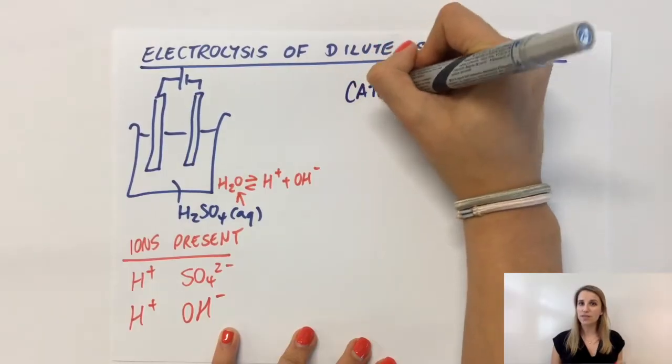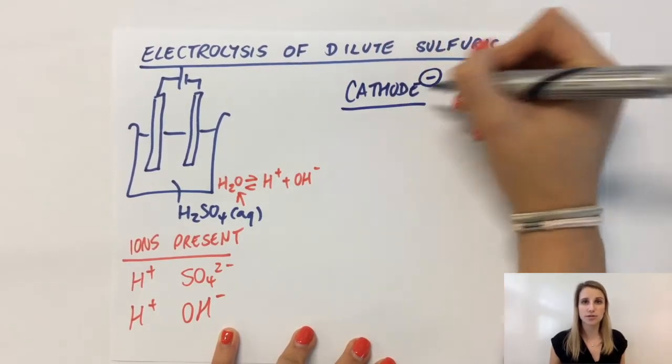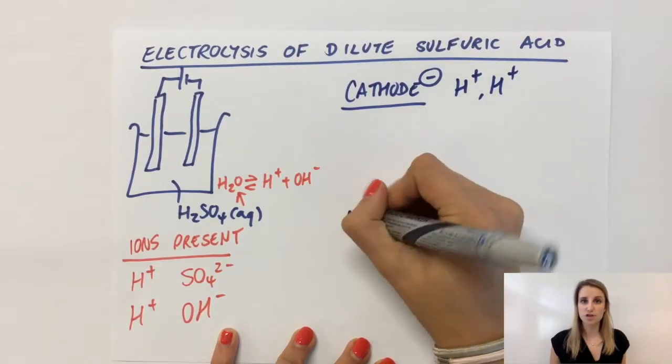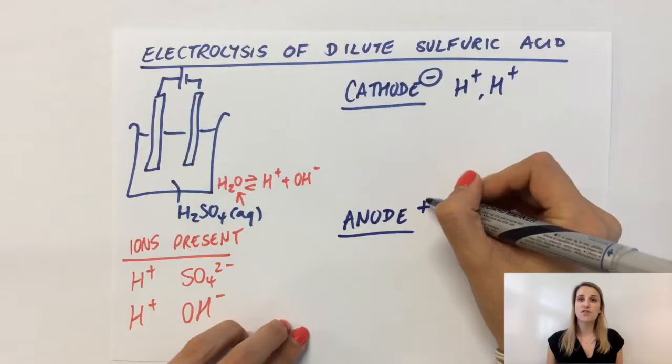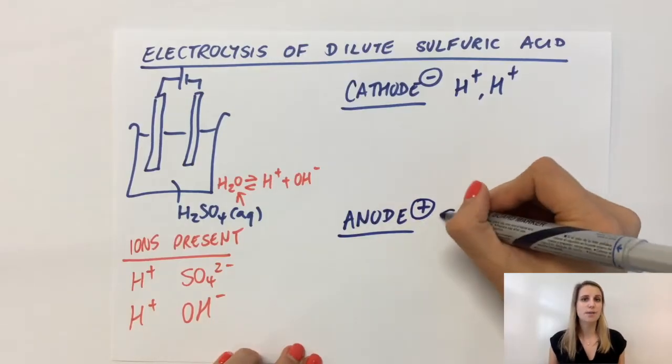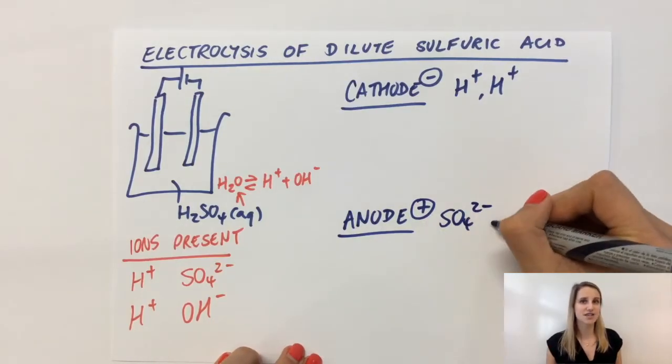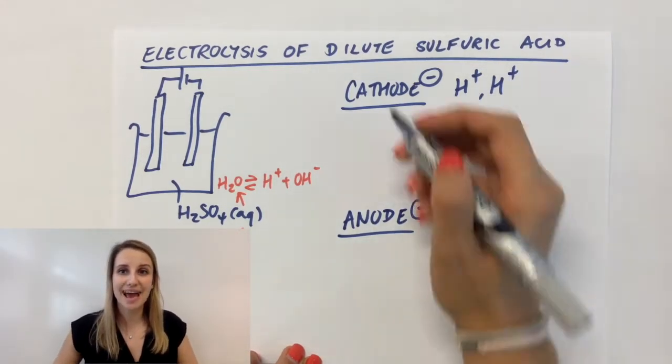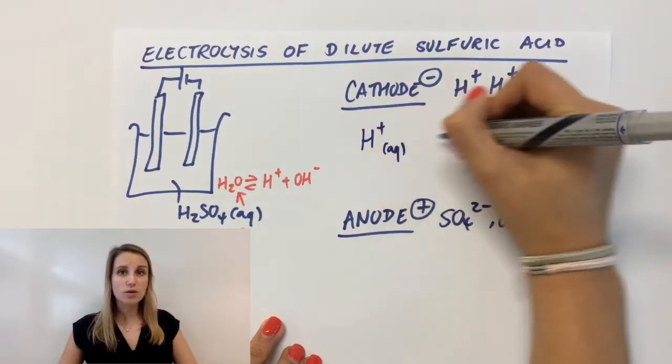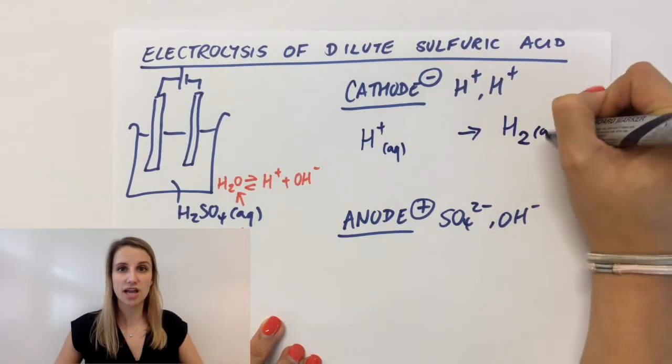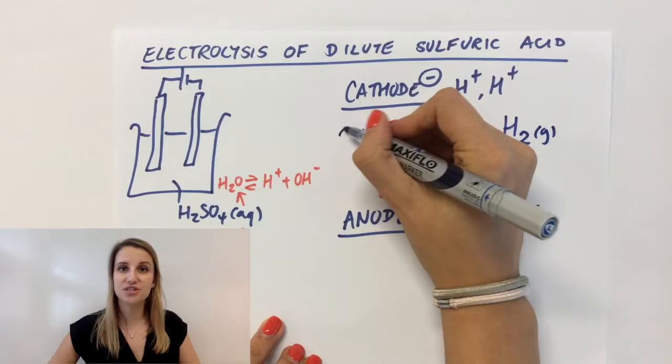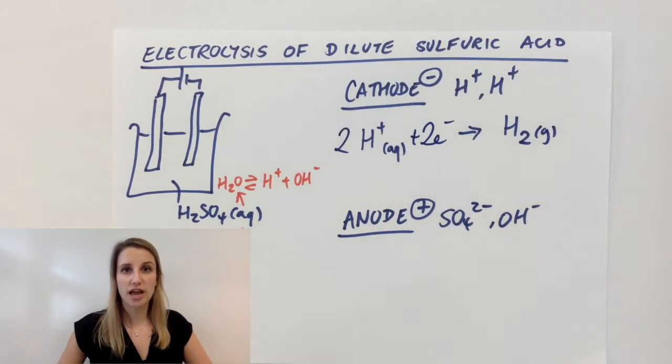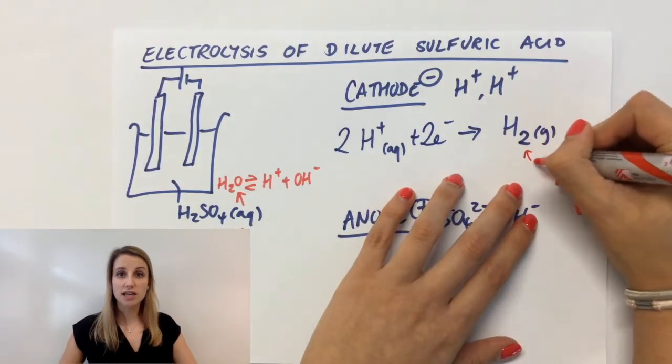Now let's think about whether they would get attracted to the cathode or the anode. The cathode is negative, so both H+ ions will be attracted there. The anode is positive, so both sulfate and hydroxide will be attracted to the anode. Luckily in this example, you don't have a choice to make at the cathode. There's only one ion attracted there, which is H+, so that must be reduced at the cathode. We can write that as 2H+ + 2e⁻ → H₂, which is a colorless gas.